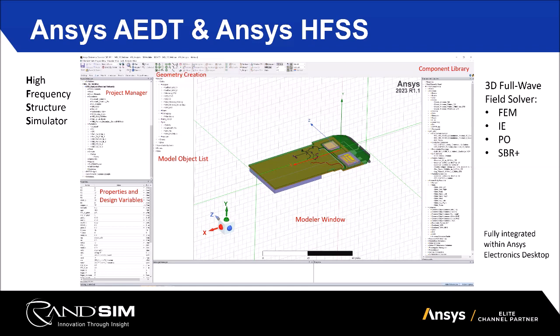This is what happens when we open up a design inside the Electronics Desktop. We have our modeler window where our model lives — this could be something you drew directly within the tool. It's an integrated modeler using history-based modeling where you can draw different shapes, manipulate, move, duplicate, and split them to create your antenna design from scratch. Or you can import native CAD formats like STEP files, STL files, parasolids, SolidWorks, etc. Once the model is in, we have a nice organization of every object and its assigned material.